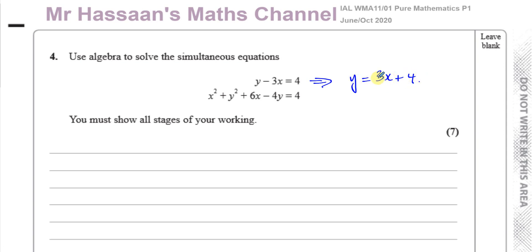Now I can take that value of y — y equals 3x plus 4 — and substitute it into the other equation. When I substitute 3x plus 4 in place of y, it will give me an equation with just x's, and solving that will tell me the values of x which satisfy both equations. Then I also need to find the values of y.